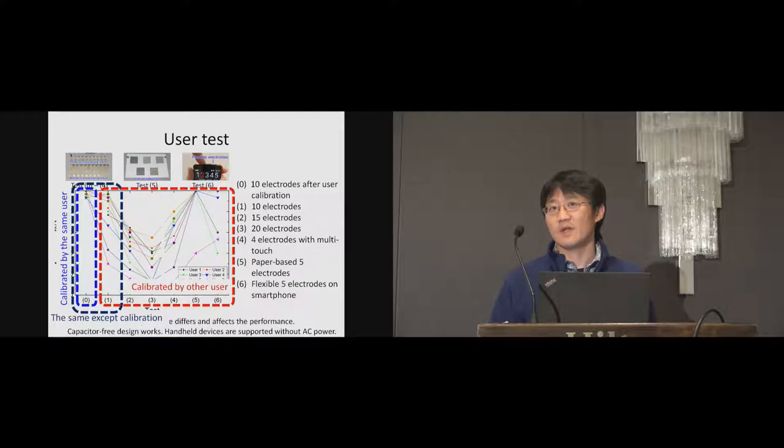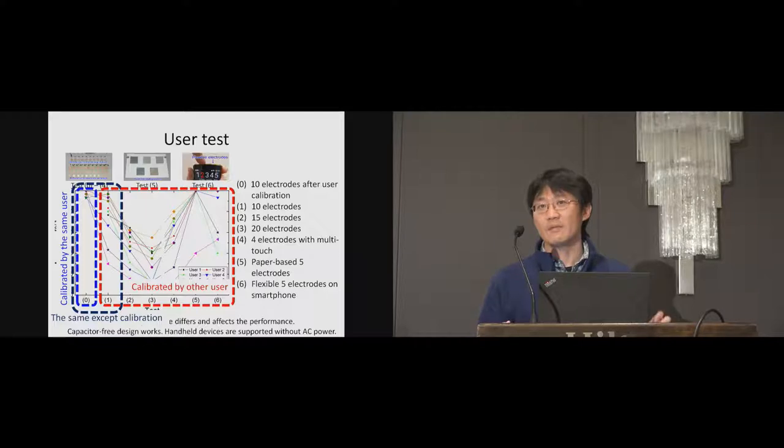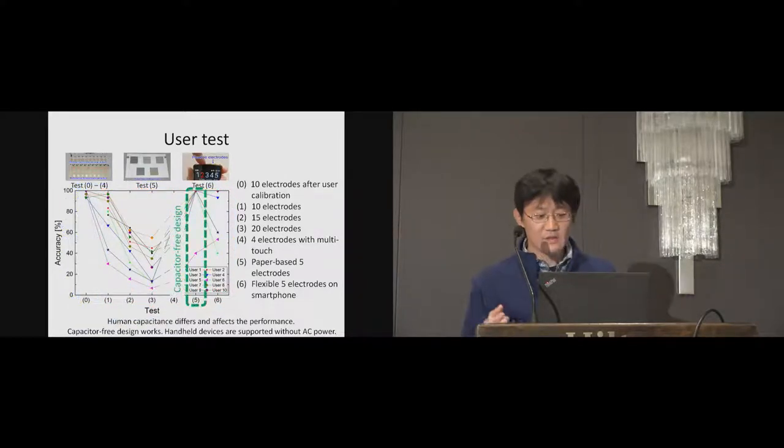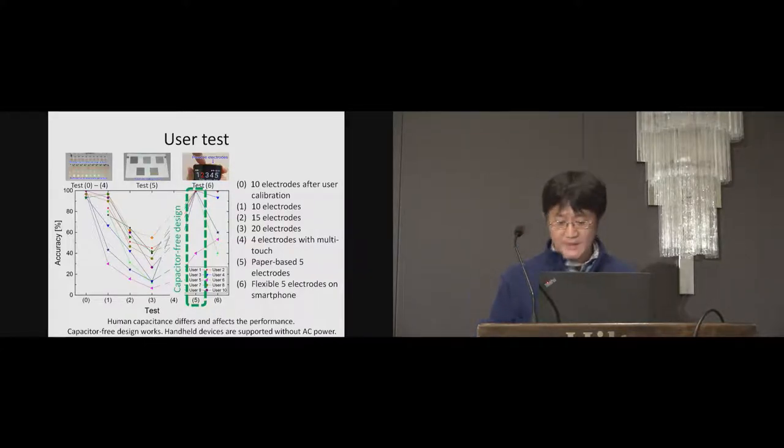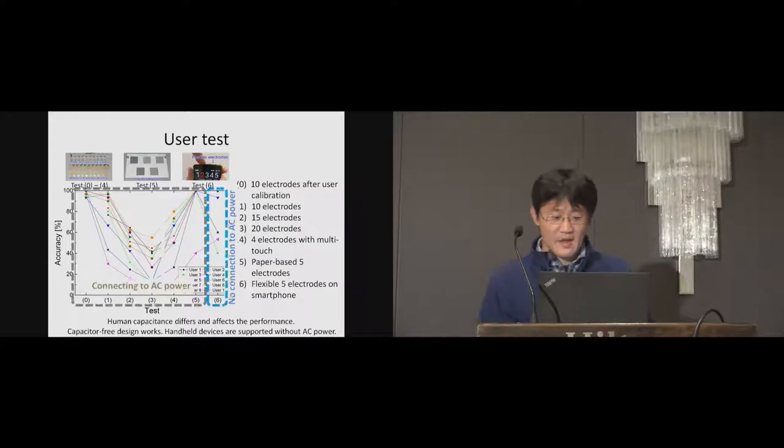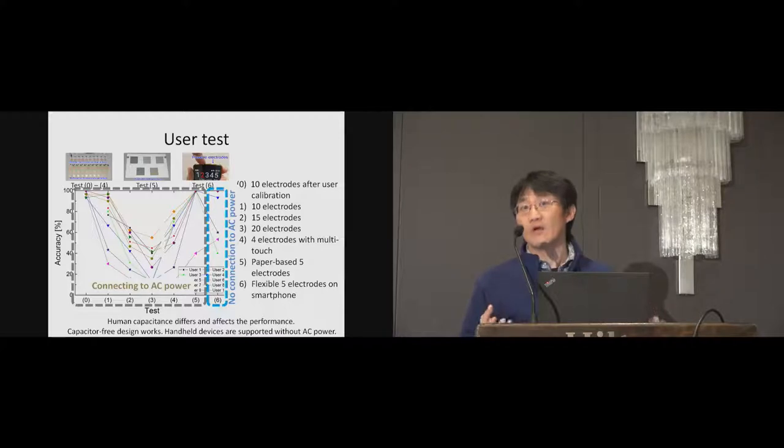So comparing test 0 and test 1, the user calibration is quite effective to improve the accuracy. This means that there are some differences among users in terms of capacitance. Test 5 indicates that capacitor-free design actually works. And test 6 indicates that connecting to AC power is not always necessary when it is applied to handheld devices.